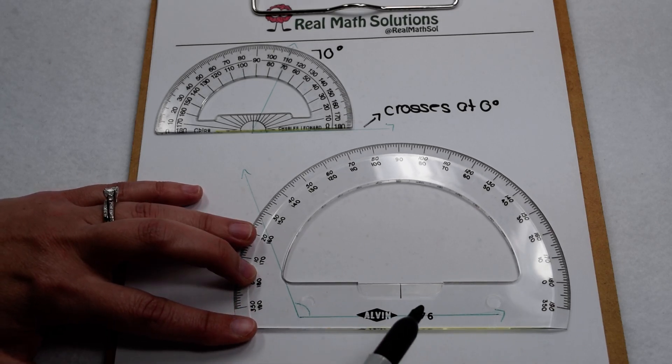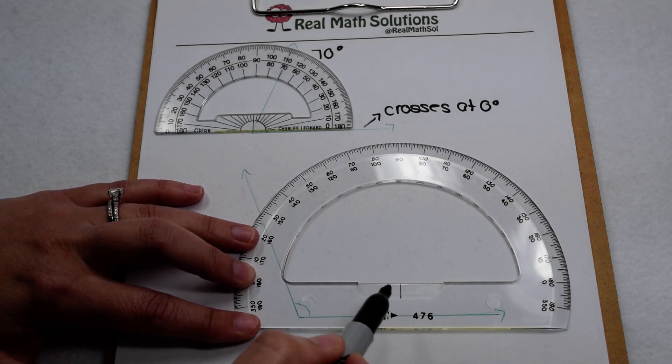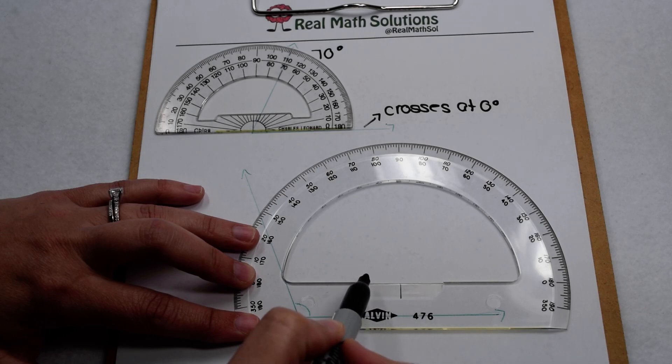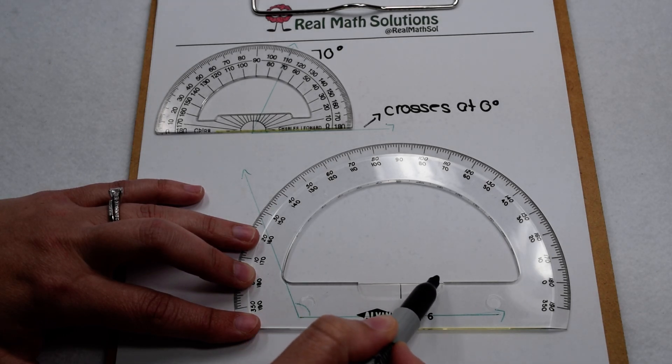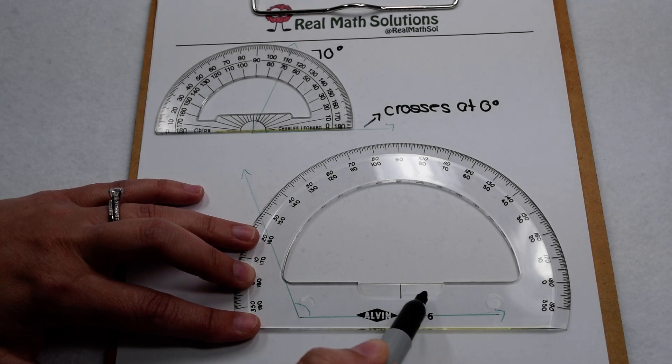Now this bigger protractor, on the other hand, is a little more complicated. We can see that there's a little indent here in the middle with a line. So that could mean we line up here along the inside, or it could mean we line up here along the bottom.